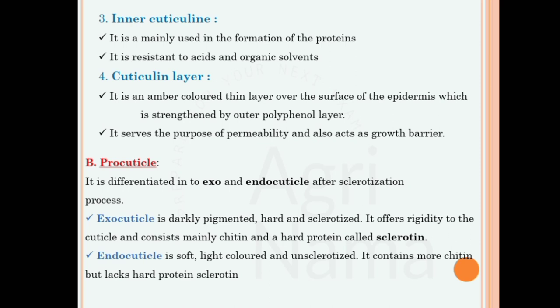Procuticle is divided into two layers: exocuticle and endocuticle. Exocuticle is darkly pigmented, hard, and sclerotized; it offers rigidity to the cuticle and consists mainly of chitin and a hard protein called sclerotin. Endocuticle is soft, light-colored, and un-sclerotized; it contains more chitin but lacks hard protein sclerotin.